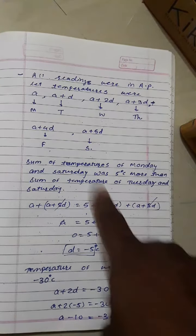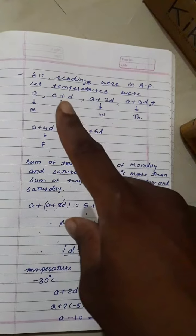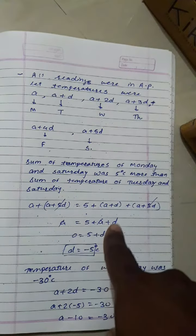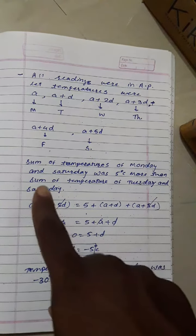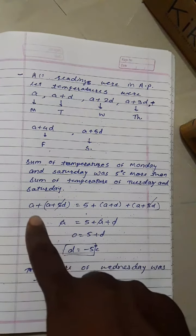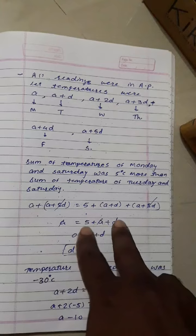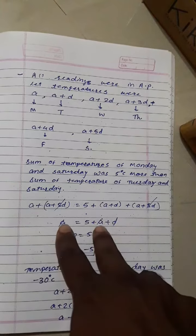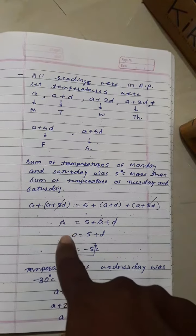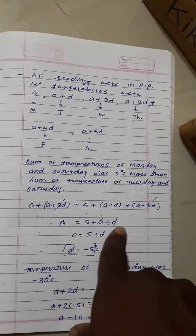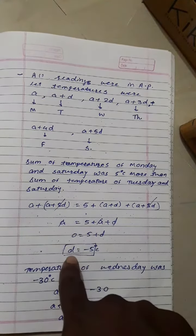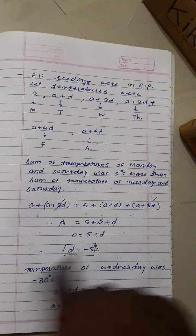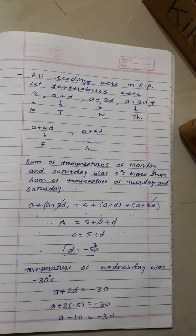Tuesday is A plus D, Saturday is A plus 5D. The A plus 5D terms cancel. So D equals minus 5.